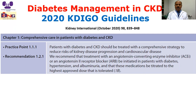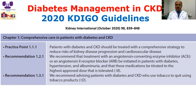KDIGO guidelines recommend that treatment with angiotensin-converting enzyme (ACE) inhibitors or angiotensin-2 receptor blockers (ARBs) be initiated in patients with diabetes, hypertension, and albuminuria, and that these medications be titrated to the highest approved dose that is tolerated. This is one of the most important points — sometimes we neglect these drugs where they are critically indicated for diabetes in the presence of kidney disease or albuminuria specifically.